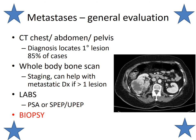The general evaluation of metastatic disease includes a CT chest, abdomen, and pelvis, which in the majority of cases locates a primary lesion. When we talk about metastatic disease, we consider the big five lesions: prostate, thyroid, breast, lung, and kidney. A whole body bone scan is very helpful to show if there is more than one lesion. Remember, a whole body bone scan isn't necessarily helpful for myeloma, where it can be cold. Labs including serum protein and urine protein electrophoresis can be helpful. PSA may be helpful for evaluating prostate cancer. But in the end, a biopsy is always the gold standard and the best way to make a definitive diagnosis.